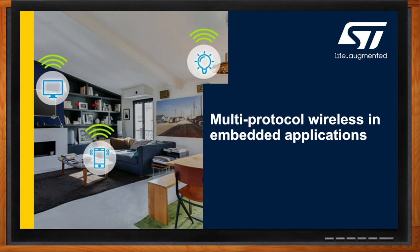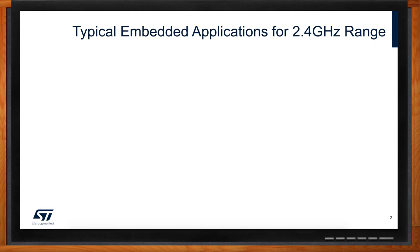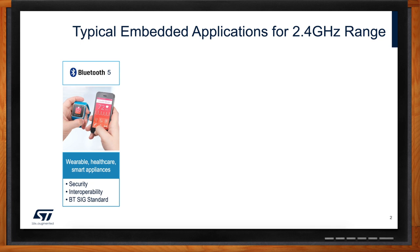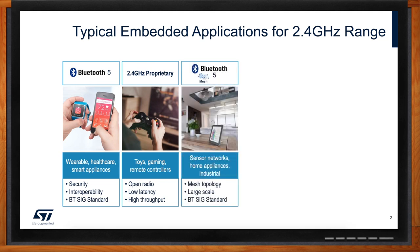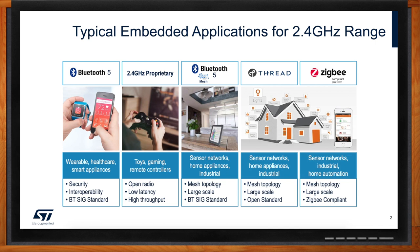Looking at embedded applications using 2.4 GHz, the smart home is a good example. You have consumer products and small appliances that mainly communicate with Bluetooth 5.2, or even some proprietary protocols. You also see devices like sensors for lighting management, HVAC systems, or metering for gas, water, and electricity that use more specific protocols optimized for their use case — so here we're talking about Thread, Zigbee, Bluetooth Mesh, and similar protocols.